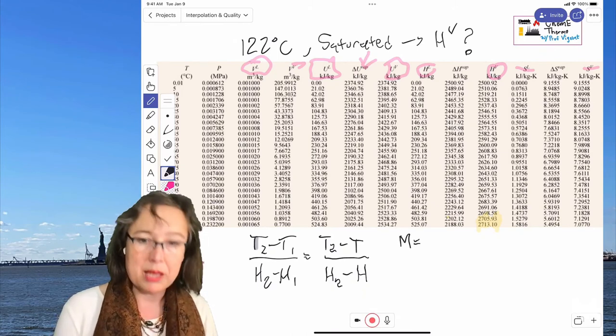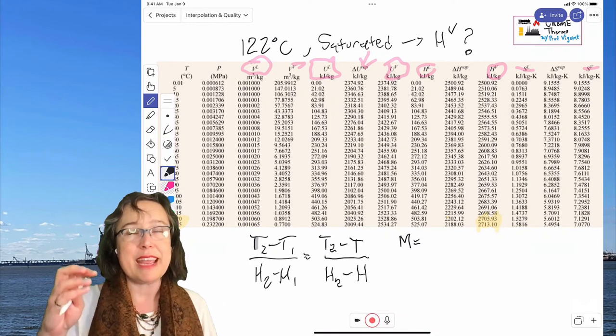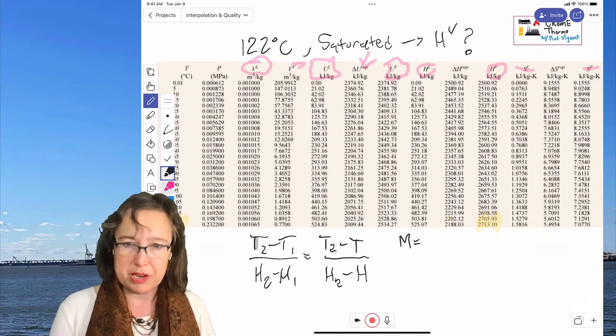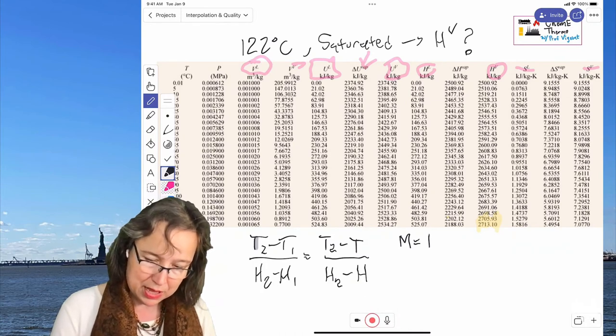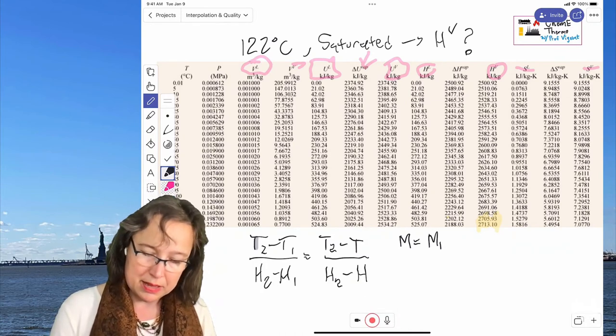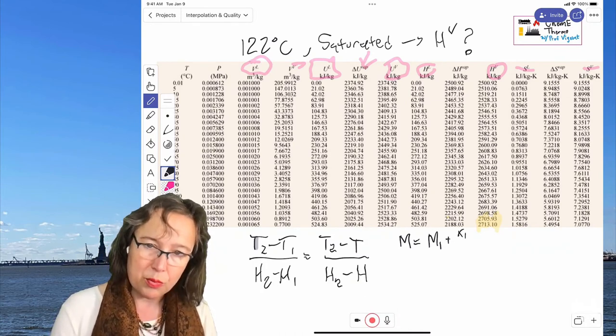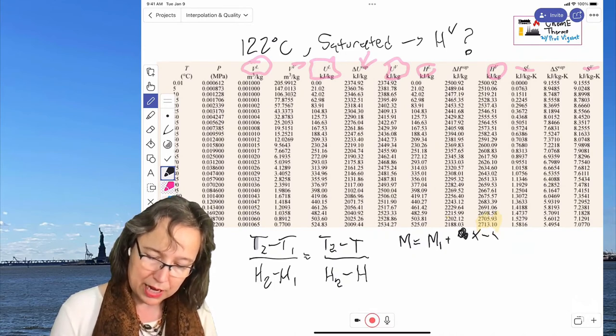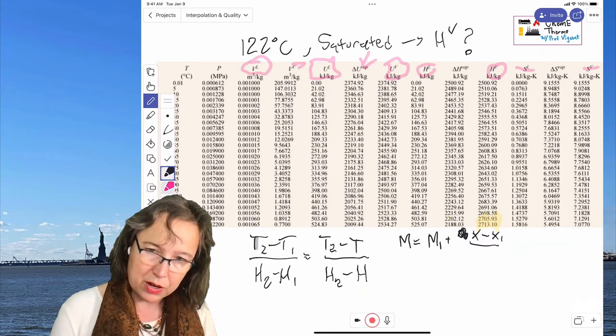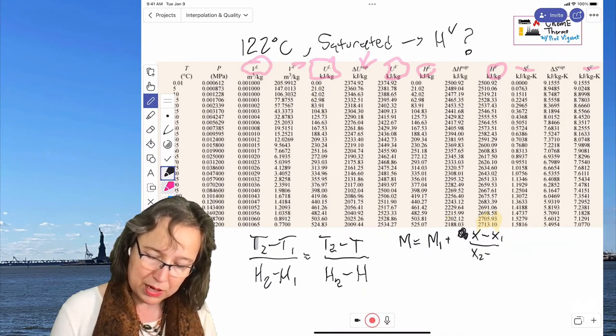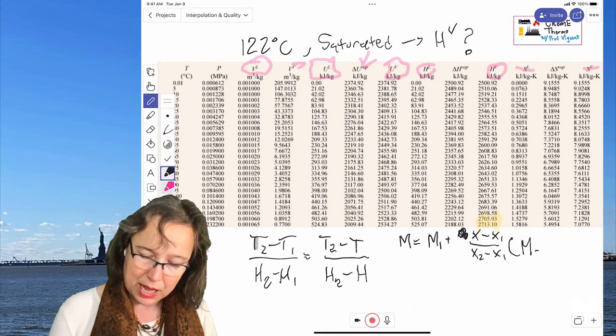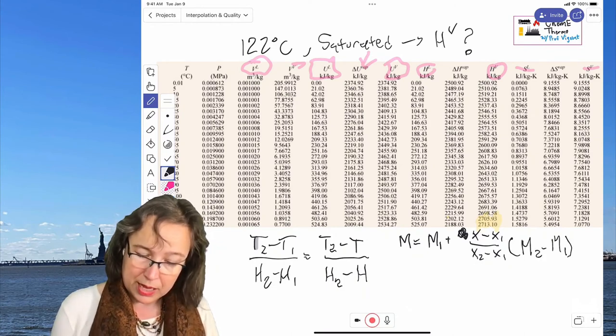And they write in terms of M, because M can stand in for any random property that you could do an interpolation on. So it's M, it's M1 plus X minus X1 over X2 minus X1, and that's all times M2 minus M1. And so there you go.